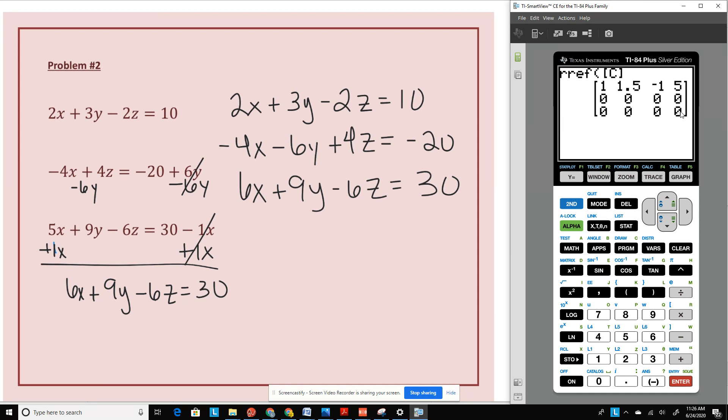Consistent and dependent. What does it mean to be consistent and dependent? That means that this graph would have infinite solutions. That means that these three planes, because we're dealing with x, y, z here, these three planes, or not just lines, are actually all exactly the same one.